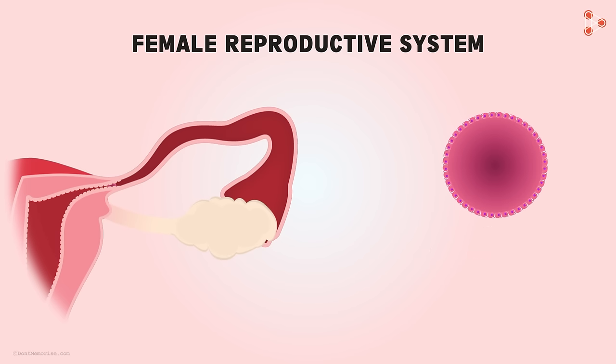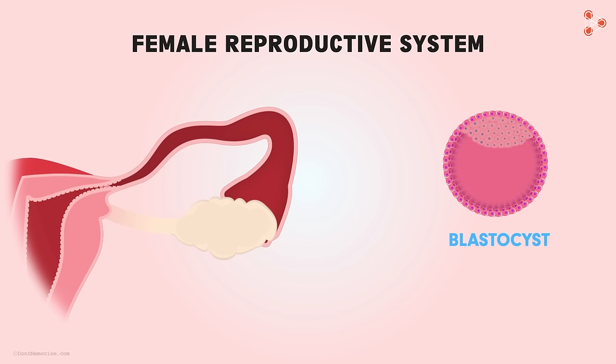Now the next stage of development will be the blastocyst. It is the stage where the embryo will have cells that have got differentiated and will even differentiate further.